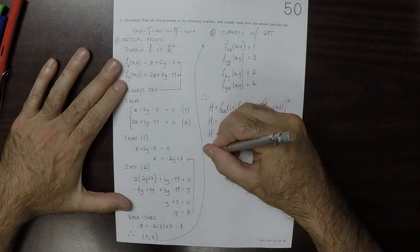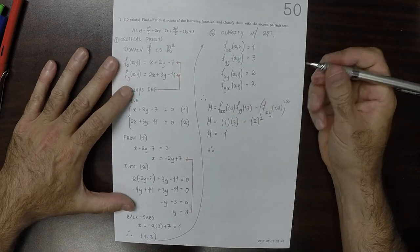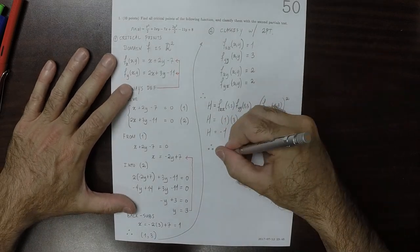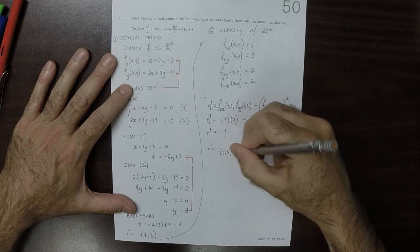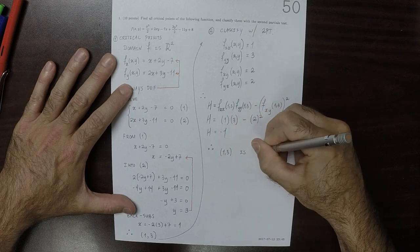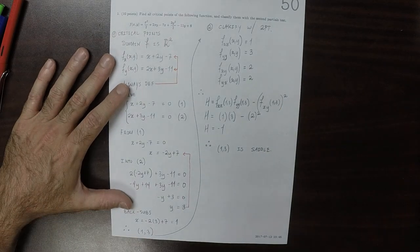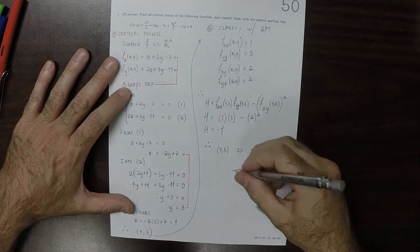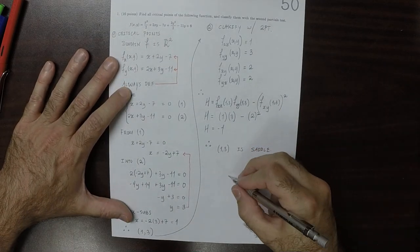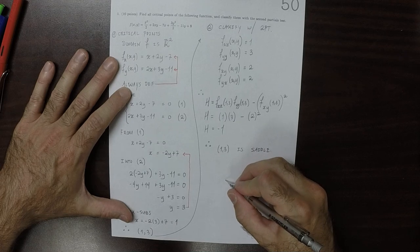As a result, the point 1, 3 is a saddle. Which is to say, if we were to attempt to draw it, it would look something like this.